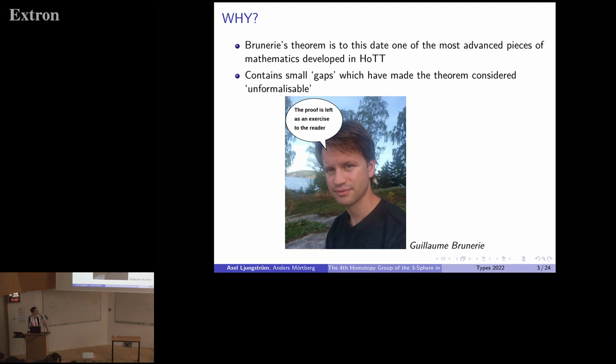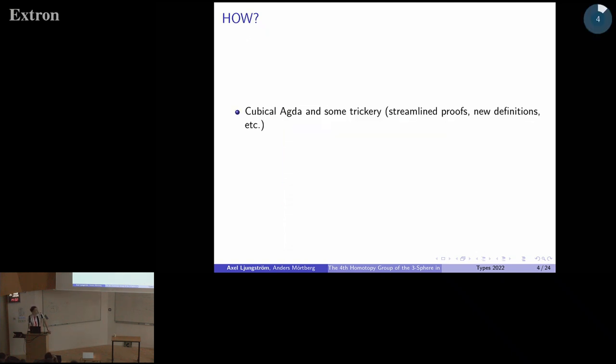That's due to Guillaume ending up in coherence hell at some point in his thesis, and he just sort of pushed this issue aside a little bit. Unfortunately, this issue is what prevented people from formalizing this proof for a very long time. What we've been doing is working in cubical Agda and trying to work around this coherence hell that Guillaume ended up in.